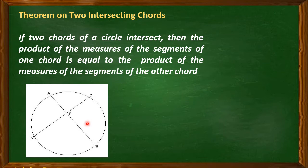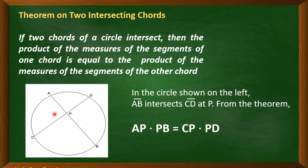So if we have here a circle, line segment AB intersects line segment CD at point P. Remember, point P is not the center of the circle.